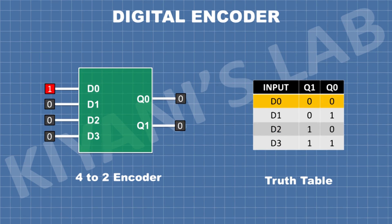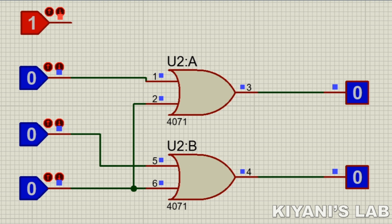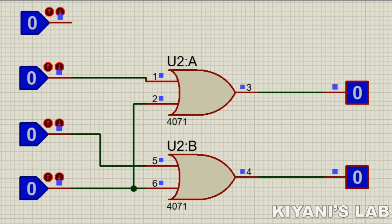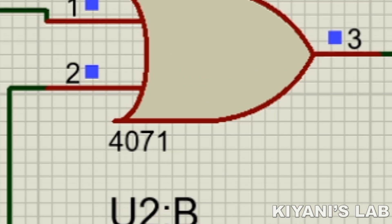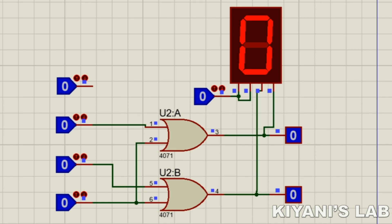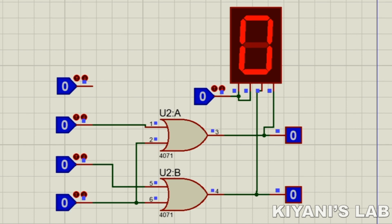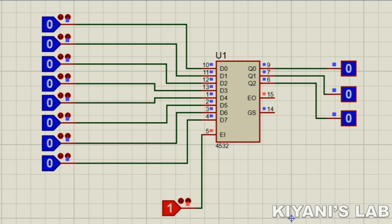So the digital encoder is converting the input into binary code. Now let's see a simulation example of digital encoders. This is a 4-to-2 encoder made with OR gates. And this is an 8-to-3 encoder.